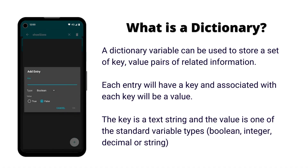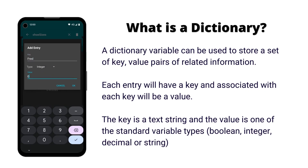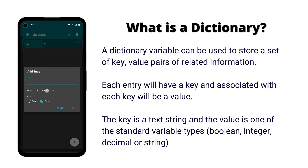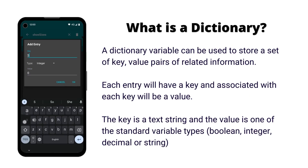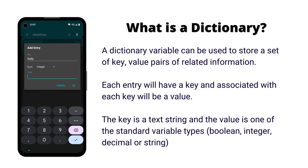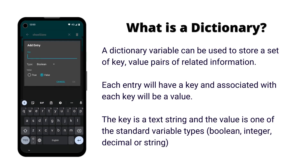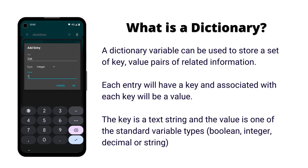As a simple example, we could store a person's shoe size in a dictionary using their name as a key and their shoe size as the value. A dictionary enables related information to be stored together in one place, avoiding the need for many separate variables to store the same amount of information.